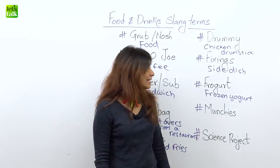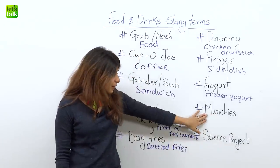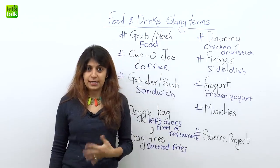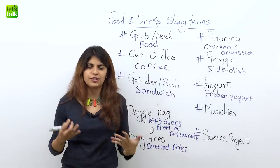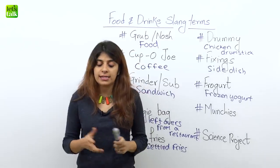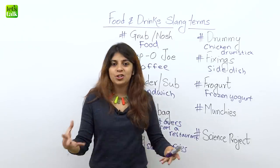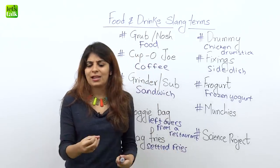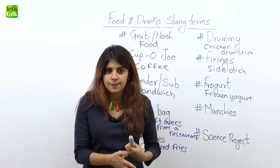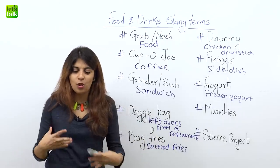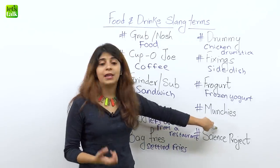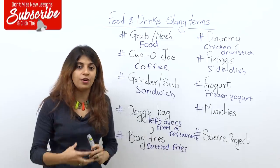Moving on to the next one: 'munchies.' There are two ways of using this slang word. You can say 'I am craving for some munchies,' meaning you are craving food or a snack. Or when you say 'here are some munchies with your drinks,' munchies refers to snack food or bar food — like French fries, chips, or a little bit of peanuts. These are snack foods you can just pop in, and they are called munchies.